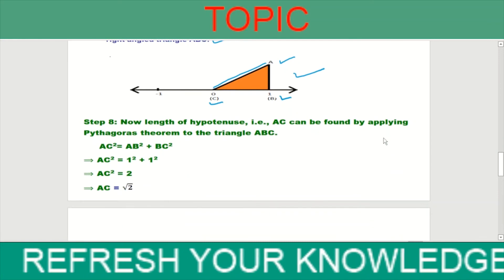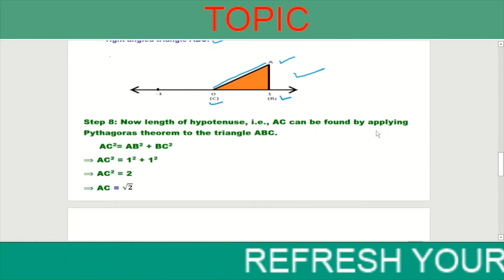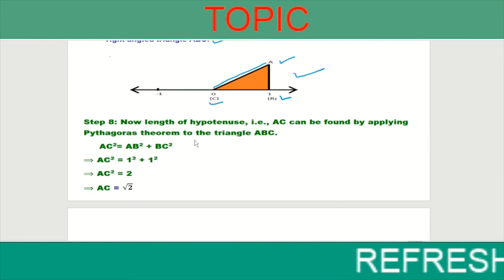Step 7: Now, the length of hypotenuse AC can be found by applying Pythagoras theorem to the triangle ABC. That is, AC squared equals AB squared plus BC squared.